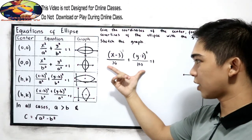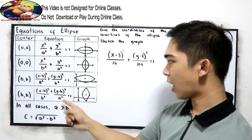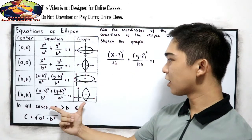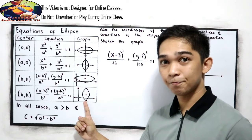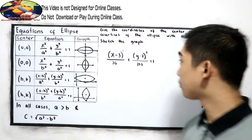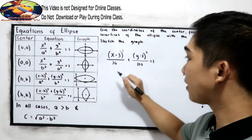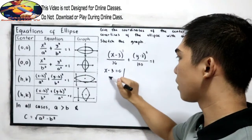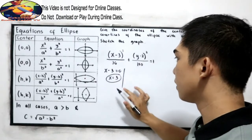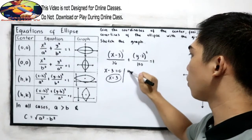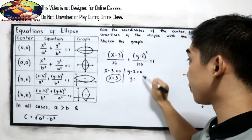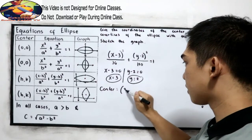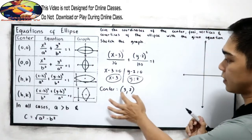So the equation is at (h,k). Our 'a' is here. Therefore, our expected graph is like this one. Now, let us find the center. To find the center, get the (h,k). So, x minus 3 is equal to 0, so x is equal to positive 3. For y, y minus 2 is equal to 0, y is equal to positive 2. So our center is (3, 2).